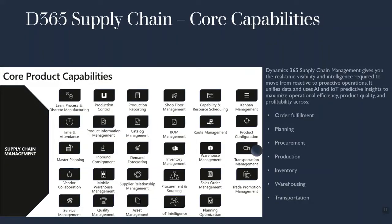Dynamics 365 Supply Chain Management gives you the real-time visibility and intelligence required to move from reactive to proactive operations. It unifies data and uses AI and IoT predictive insights to maximize operational efficiency, product quality and profitability across order fulfillment, planning, procurement, production, inventory, warehousing and transportation.